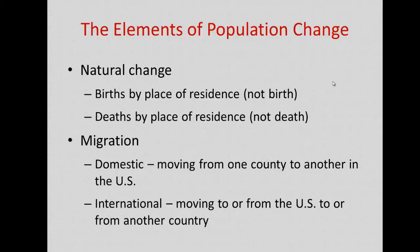There are two types of migration: domestic migration — someone in the United States moving from one county to another — and international migration, moving to or from another country. For example, if someone moved from a Texas county to an Iowa county to work in meatpacking, that's domestic migration even if they're originally from Mexico or Guatemala. But if someone moved from Beijing to Ames, Iowa to attend Iowa State University, that would be international migration.